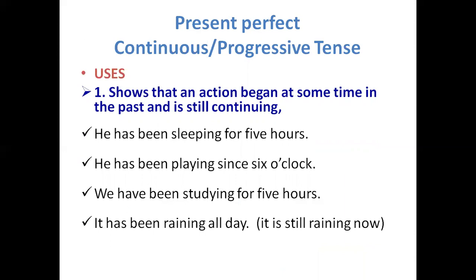First use of present perfect continuous: an action that began at some time in the past and is still continuing. We use since and for to show this. Examples: 'He has been sleeping for five hours' — meaning he is still sleeping. 'He has been playing since six o'clock' — the activity started in the past and is still going on in the present. 'We have been studying for five hours.' 'It has been raining all day' — it started in the morning and is still raining. Note: with 'all day' or 'all morning,' we don't put since or for, as 'all' itself implies the duration.